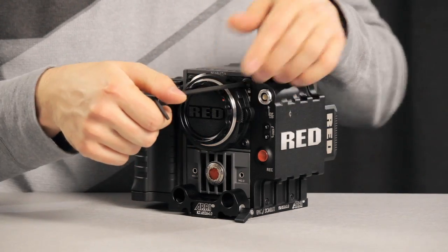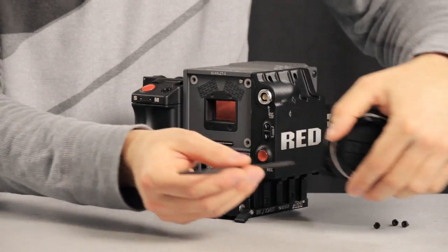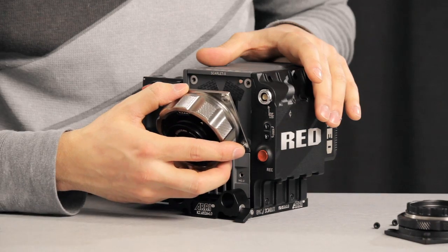The PL mount that is also available for the Scarlett X can be easily installed. You remove these four screws, take off the Canon mount, and get the PL mount back on.